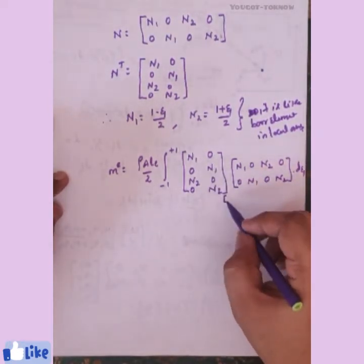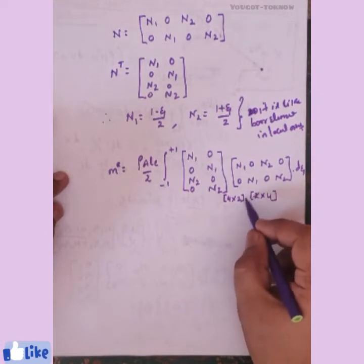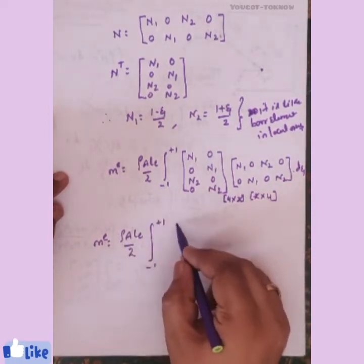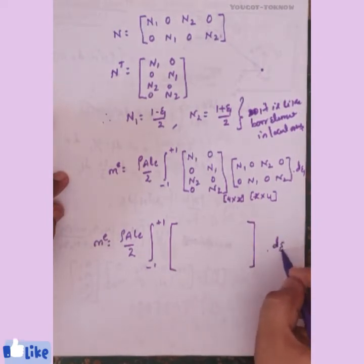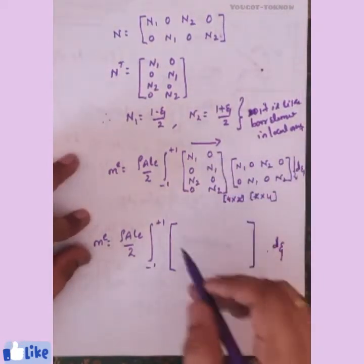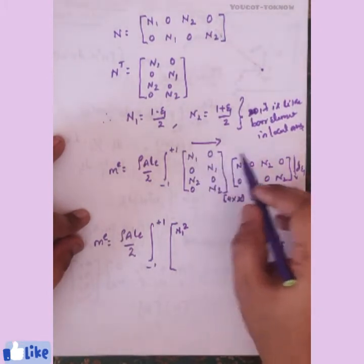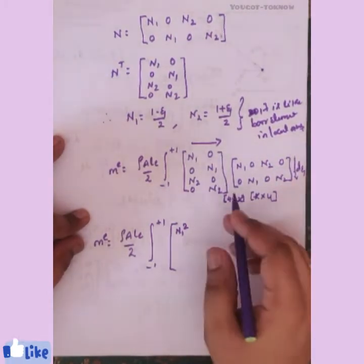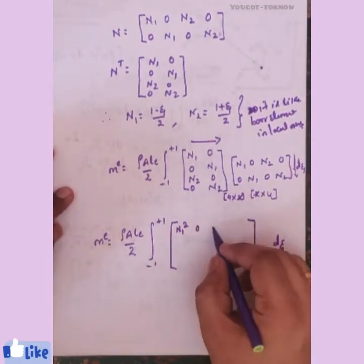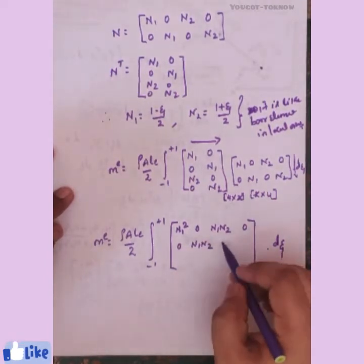The result is a 4×4 matrix (4 rows from N-transpose, 4 columns from N). Multiplying out: the first row times first column gives N1 squared; first row times third column gives N1 N2; off-diagonal terms involving zeros give zero. Working through all products systematically yields a 4×4 matrix.